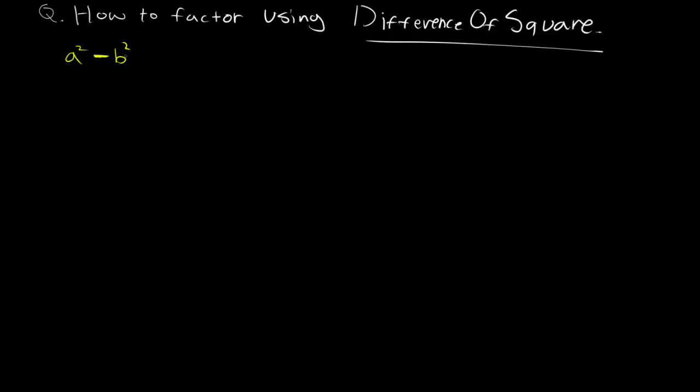That's why we call this a difference of squares - difference meaning subtraction, square meaning the two exponent. So when you see this kind of term, we can actually convert this into factored form right away.